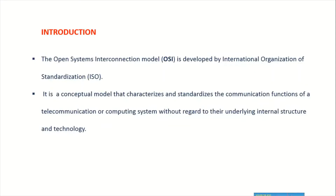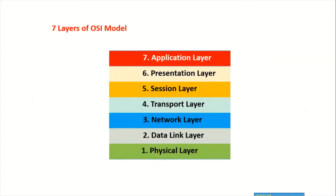The OSI model is an Open System Interconnection model developed by ISO. It was implemented to standardize the functions of network communications without affecting its technology. The OSI model divides networks into seven sub-layers. Starting from the bottom, these are: physical layer, data link layer, and network layer.